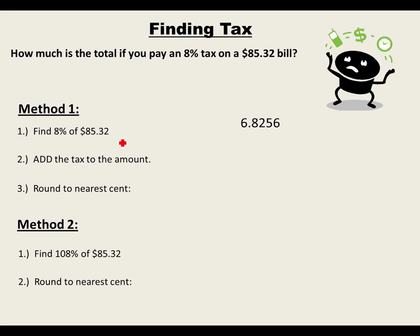Round only when you're finished with all your calculations. If you round at every step along the way, you can end up with a slightly off answer. So do $85.32 plus $6.8256 and you get $92.1456 — round that to $92.15.